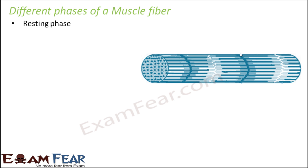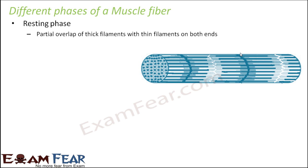This is how the muscle fiber looks in the resting phase. There is a partial overlap of thick filaments with thin filaments on both ends. The thin filaments in this region are actin, and the thick filaments are myosin. We name these as the I-band — the isotropic band — and the A-band — the anisotropic band.